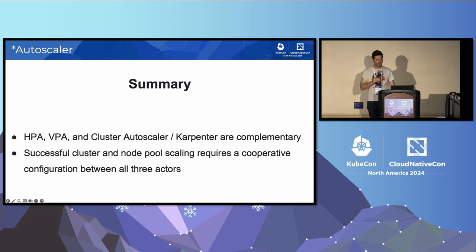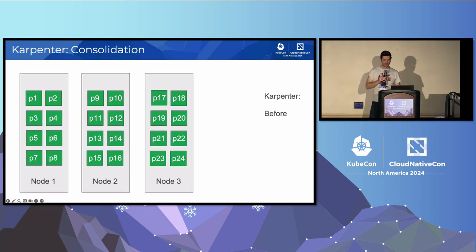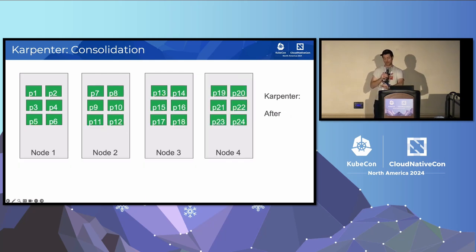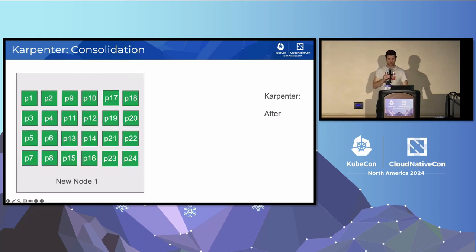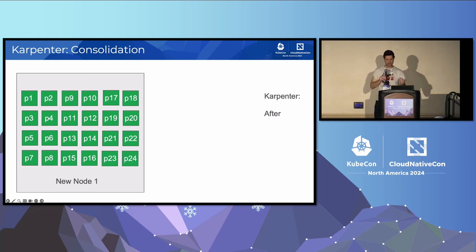All that is to say HPA, VPA, and Cluster Autoscaler or Karpenter are complementary. Successful cluster and node pool scaling requires a cooperative configuration between all three actors. Karpenter's consolidation feature allows configuring your node pool to take advantage of real-time opportunities in the environment — continually optimizing infrastructure for spend and performance, for instance by identifying a cheaper or equivalently performant node configuration for the same workload.